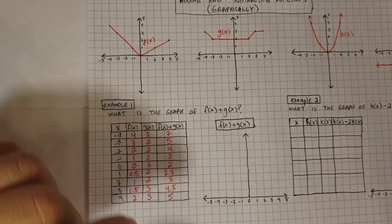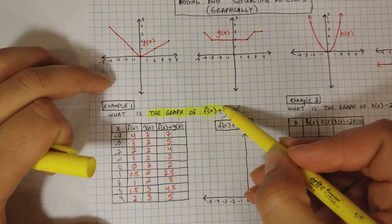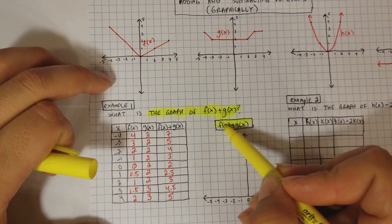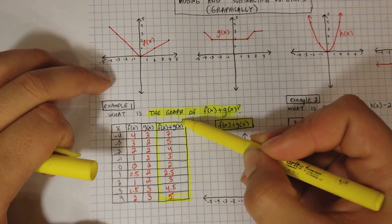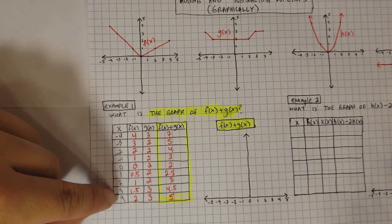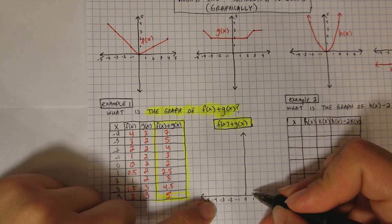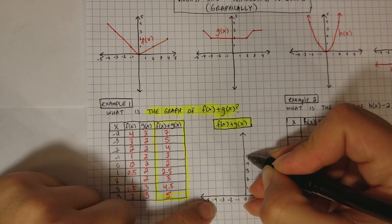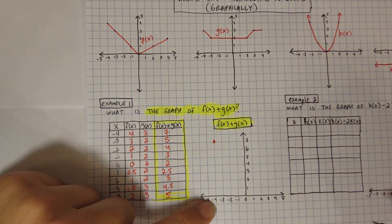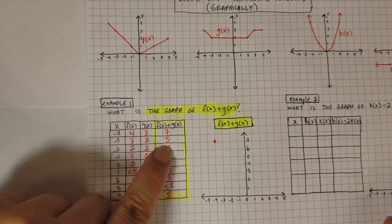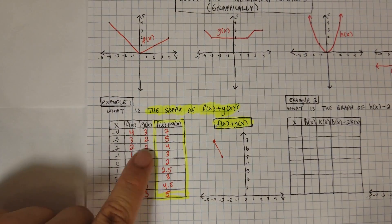So what is the graph of f(x) + g(x)? If they don't give you a table, you have to make it yourself — very important. Now let's graph this using my f(x) + g(x) column. I have the same domain from negative 4 to positive 4. At negative 4, the value is 7, so I go all the way up to 7. At negative 3, the value is 5. I'll connect the dots together as I go along to create the shape of the function.